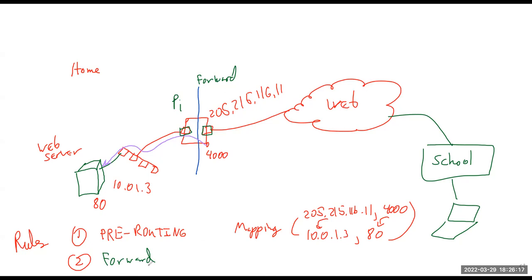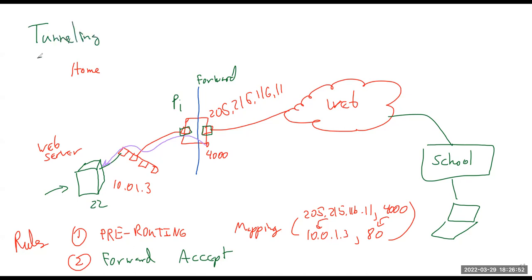There's a second problem: the packet needs to travel from one interface to another, which means it passes through the forward chain. The forward chain, by default, will not allow it through. So we need to add a forward chain rule — a simple ACCEPT rule — to let that packet go through. After that, port 80 must be open on the destination machine, or port 22 if you're mapping SSH instead.